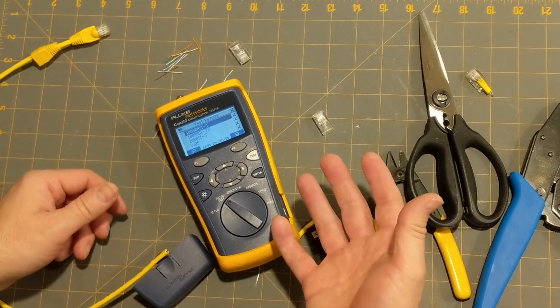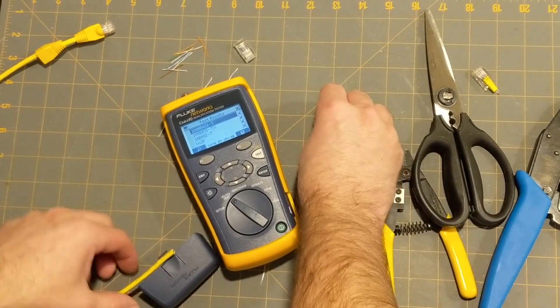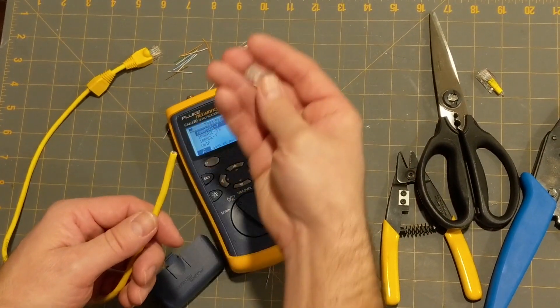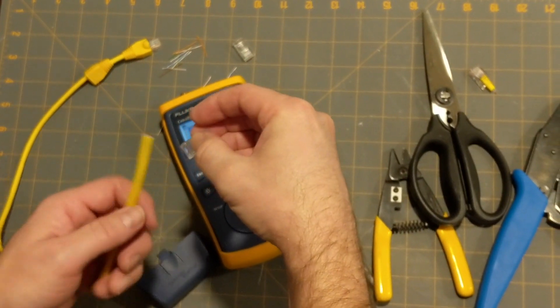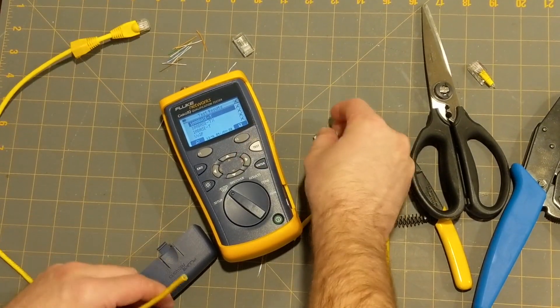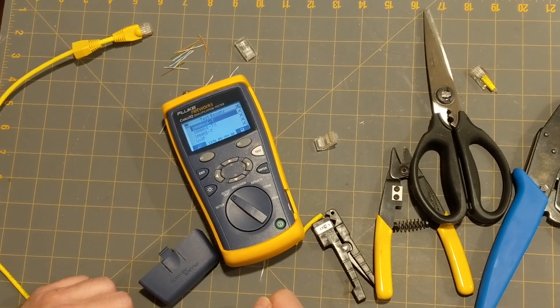So, I'm going to repeat the process, again, stripping, arranging, placing the terminator on it, and crimping it on, and then using the tester, to see if everything's working.